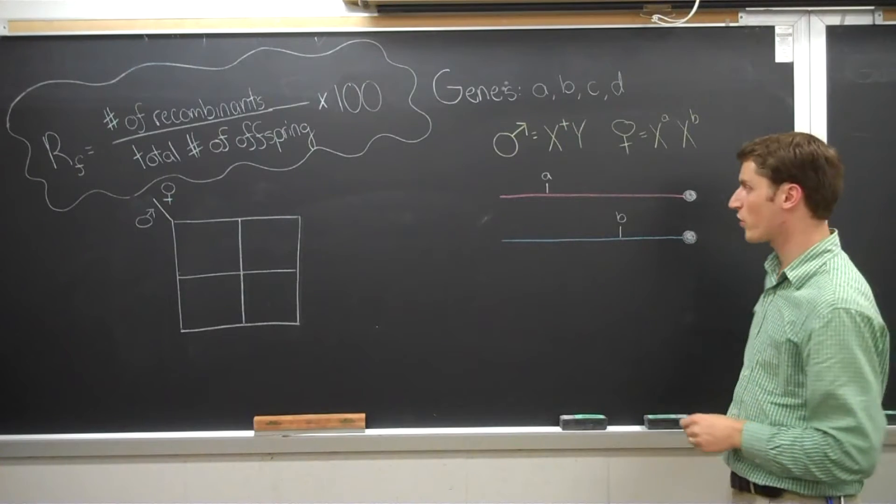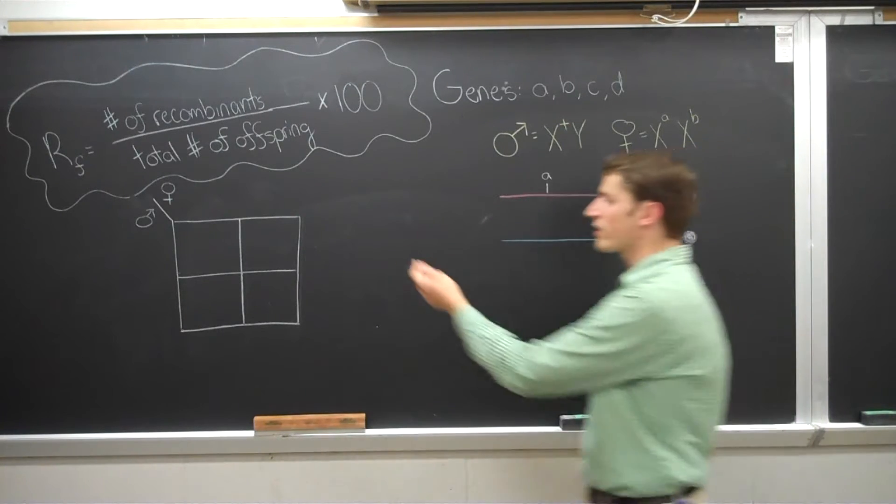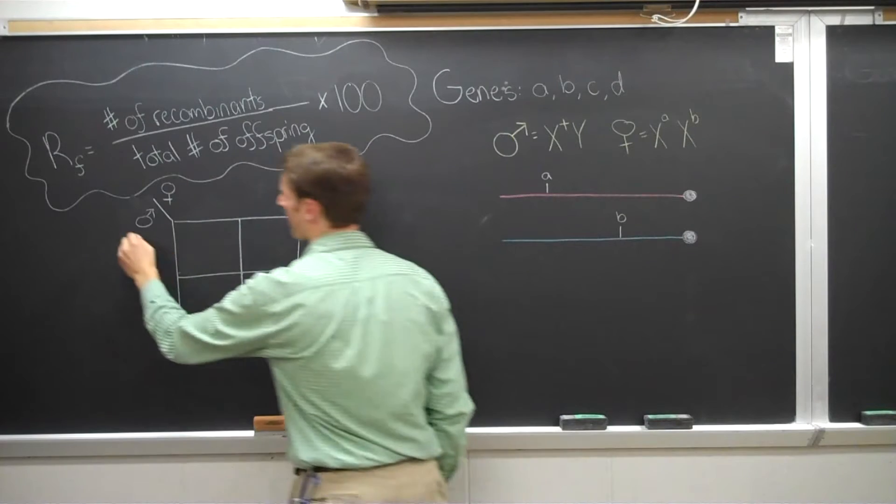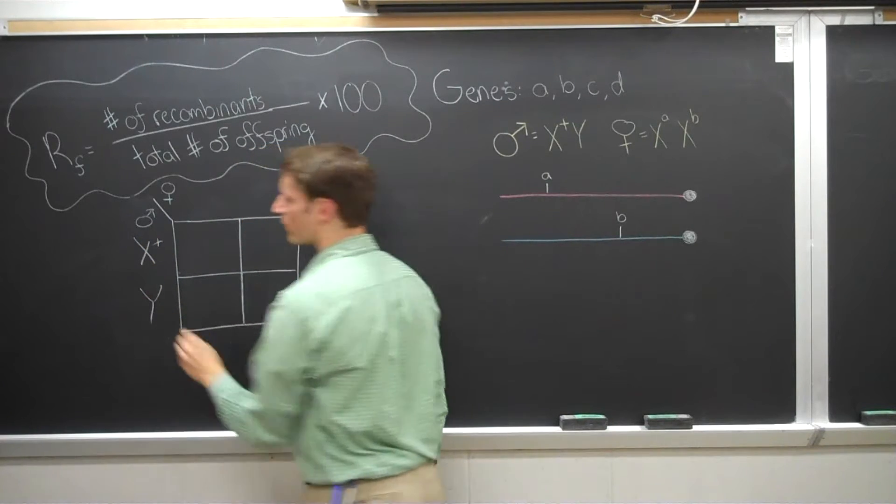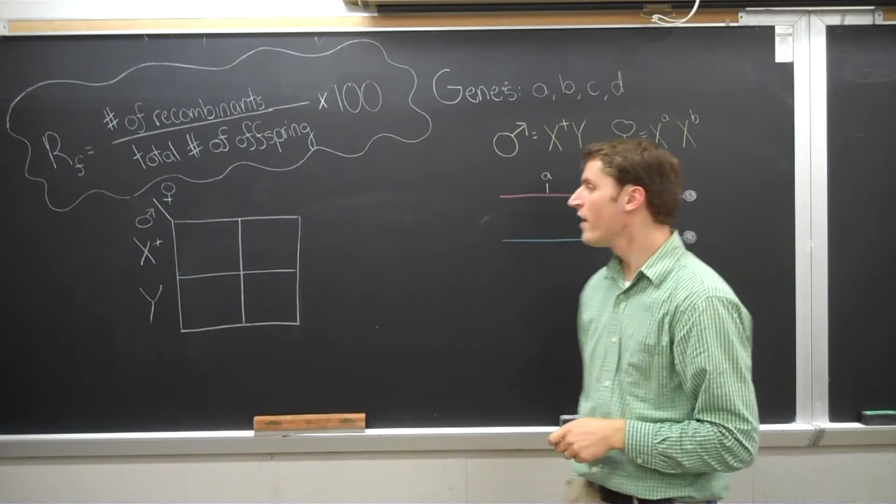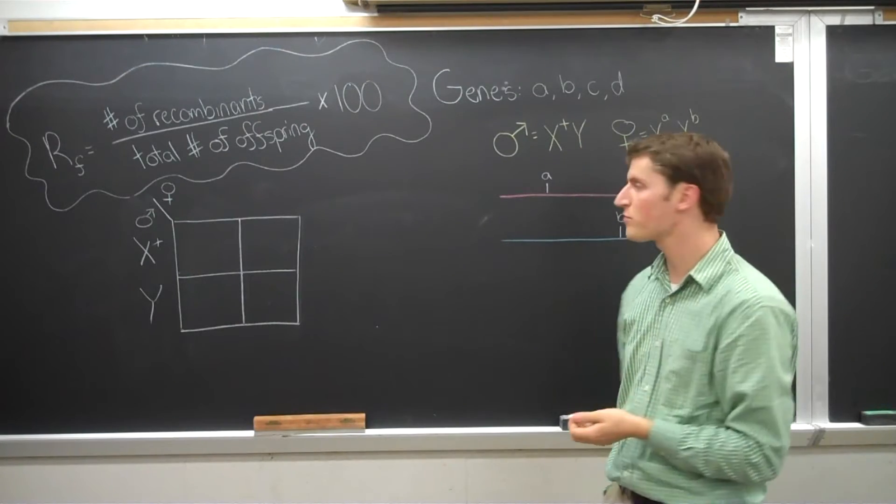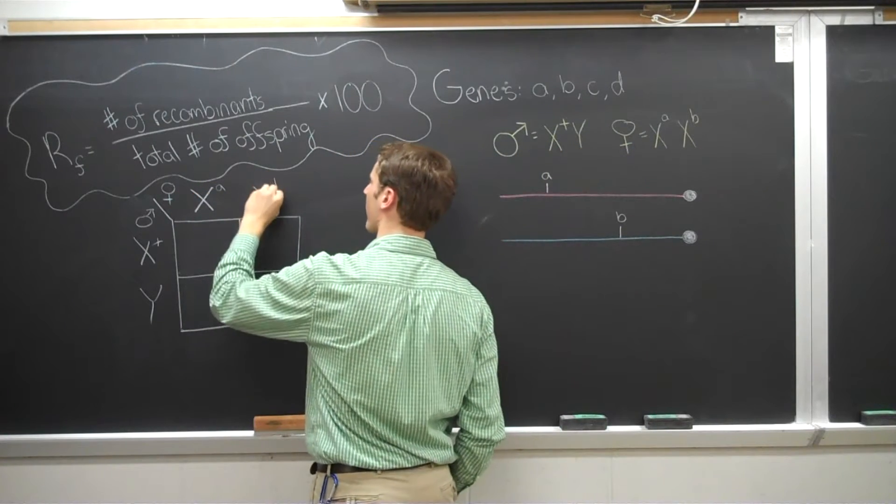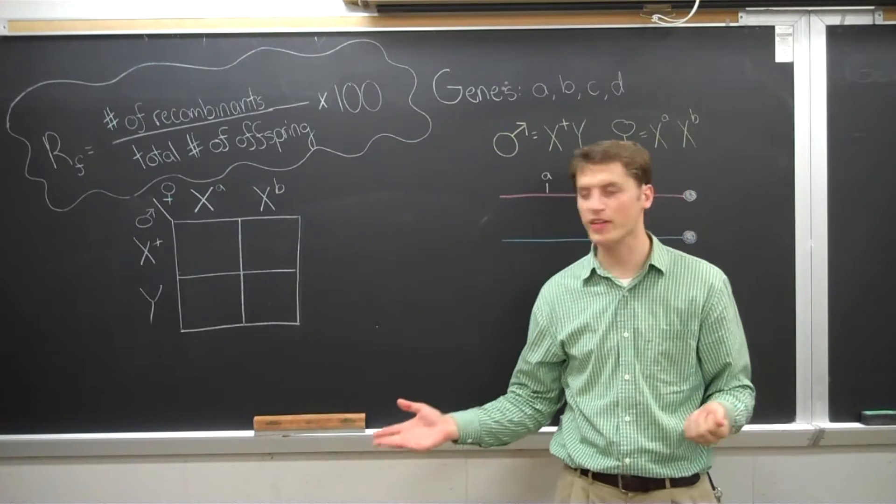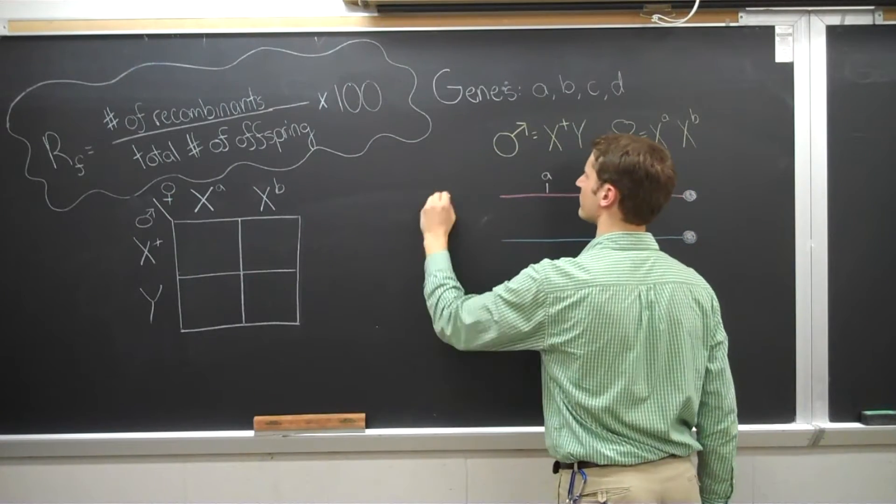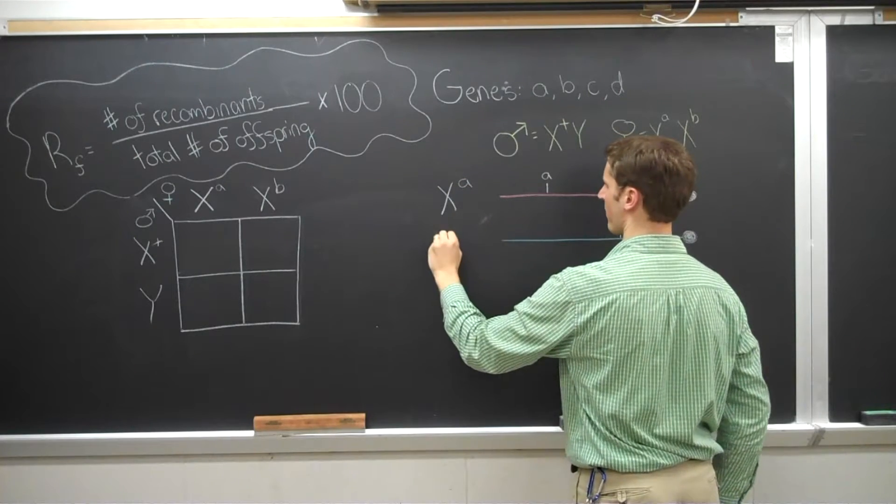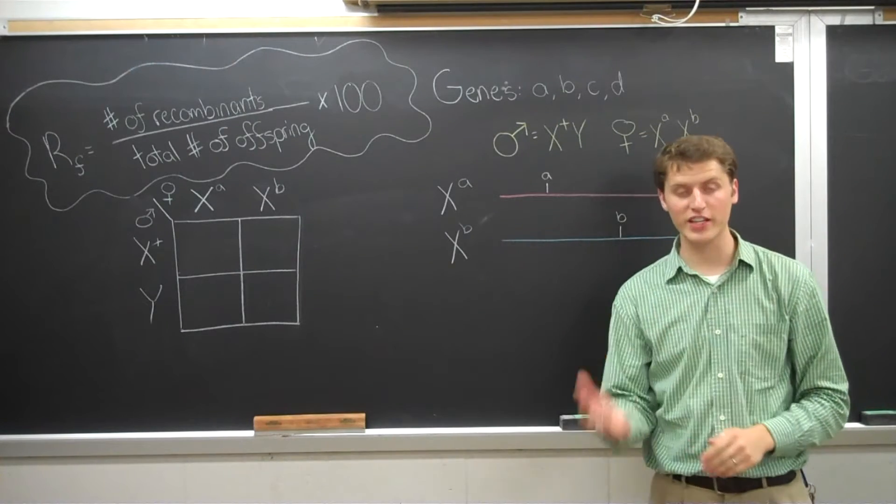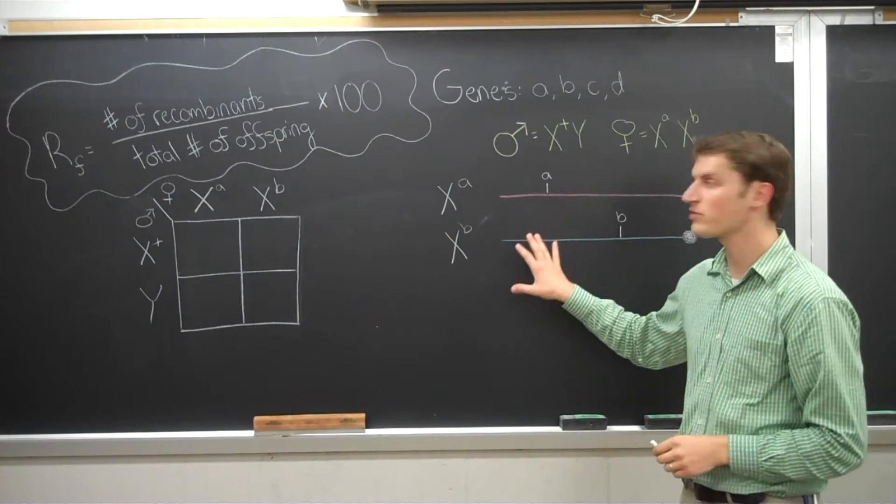Now, if we were to draw a Punnett square of this cross, the Punnett square on the outside, we place the gametes, the possible gametes. The male is always going to be X plus Y because we're using a wild type male. The female, in most cases, we would draw this Punnett square and we would write XA, XB. Those are two possible gametes. This one being XA, this one being XB. However, because of the process of recombination, there are other gametes that are possible from the female.